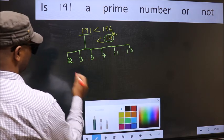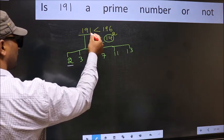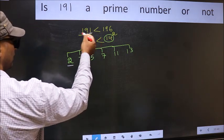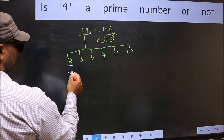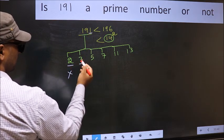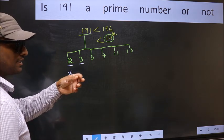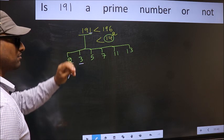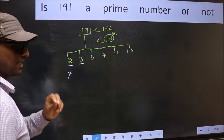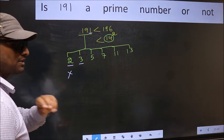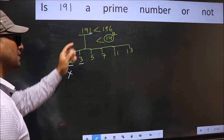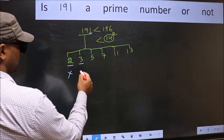Starting with 2. Last digit 1, not even. So this is not divisible by 2. Next, number 3. To check divisibility by 3, add the digits. 1 plus 9 plus 1, we get 11. 11 is not divisible by 3, so this number is also not divisible by 3.